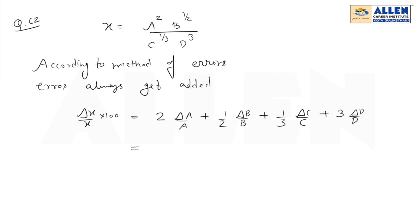Putting the values: 2(1%) + (1/2)(2%) + (1/3)(3%) + 3(4%). After simplifying, we get 2% + 1% + 1% + 12%. So the maximum percentage error in the measurement of X is 16%.